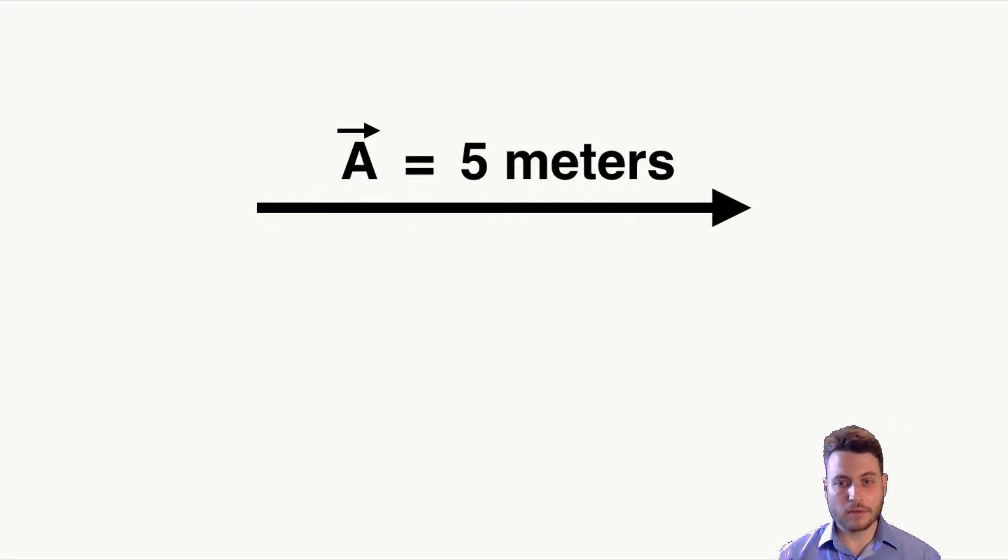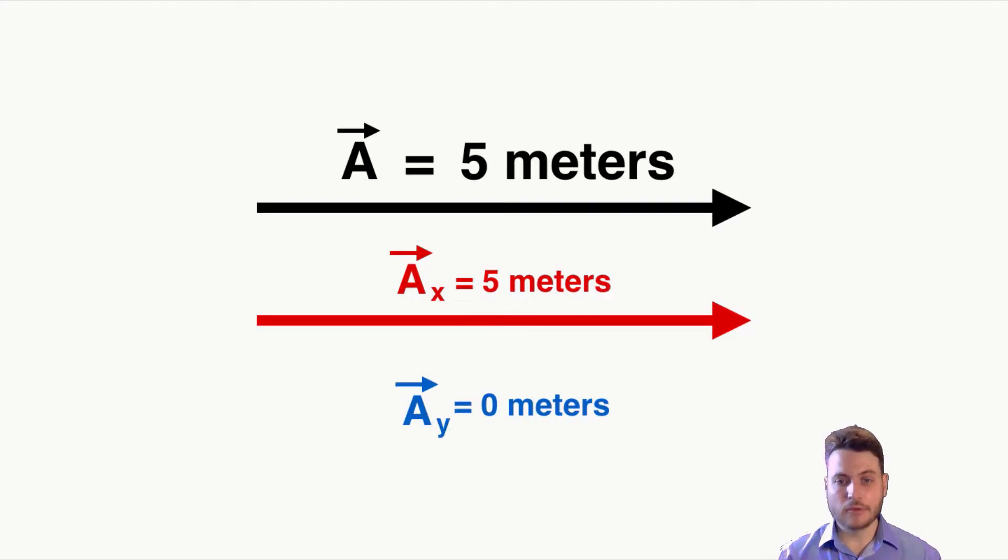Even if you have a perfectly horizontal or perfectly vertical vector, we can still say that it technically has an x and y component. The x component is how far it goes in the horizontal direction. And so if this is five meters perfectly horizontally, that means the x component is just five meters. It's the same as the original vector. And we would just say that the y component is zero here because it's not going up or down at all.